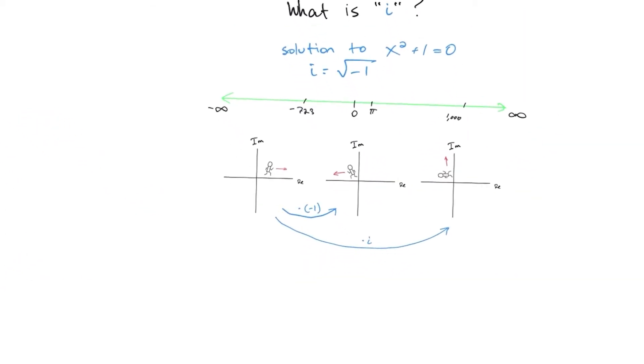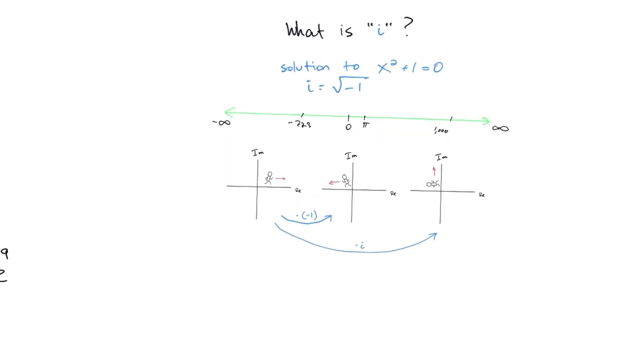Now, let's go on to what is i, the imaginary unit? The classical textbook definition is that it is the solution to the quadratic equation x squared plus 1 equals 0. Or in other terms, i is just the square root of negative 1. But I don't think that's simple enough to explain it. So let's try another approach.